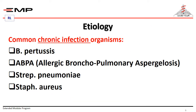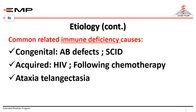The etiology can be defined into three main categories. The first category involves common chronic infection organisms like Bordetella pertussis, allergic bronchopulmonary aspergillosis, Streptococcus pneumoniae, and Staphylococcus aureus. The second category is related to immune deficiency syndromes — congenital antibody defects, severe combined immune deficiency (SCID), or acquired immune deficiency such as HIV infection or following chemotherapy.